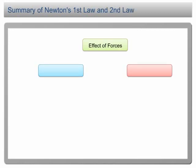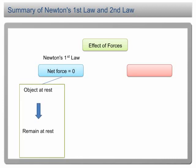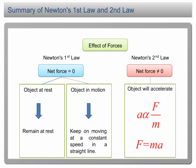Summary of Newton's first law and second law. Let's summarize our discussions on Newton's first and second laws. Newton's first law states that if the net force is equal to zero, an object at rest will remain at rest and an object in motion will keep on moving at a constant speed in a straight line. Newton's second law states that if the net force is not equal to zero, the object will accelerate, and the acceleration can be determined from the equation F equals ma.